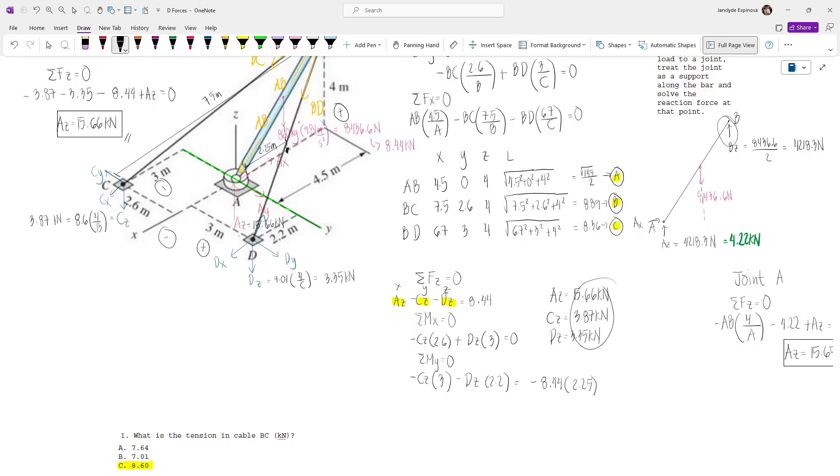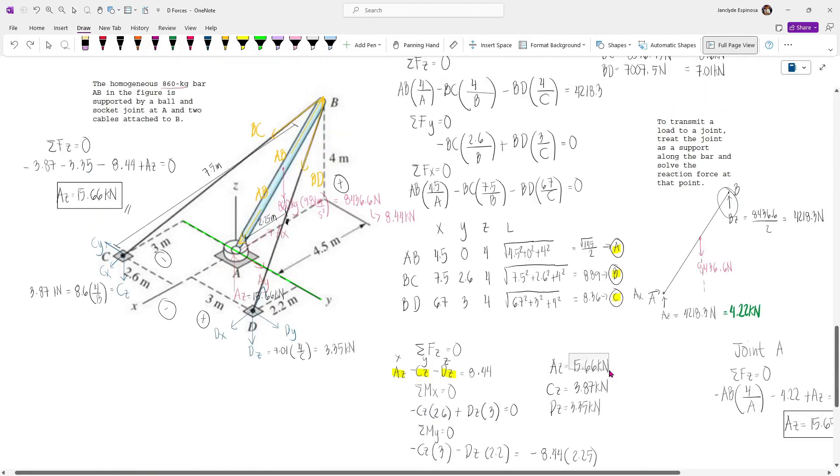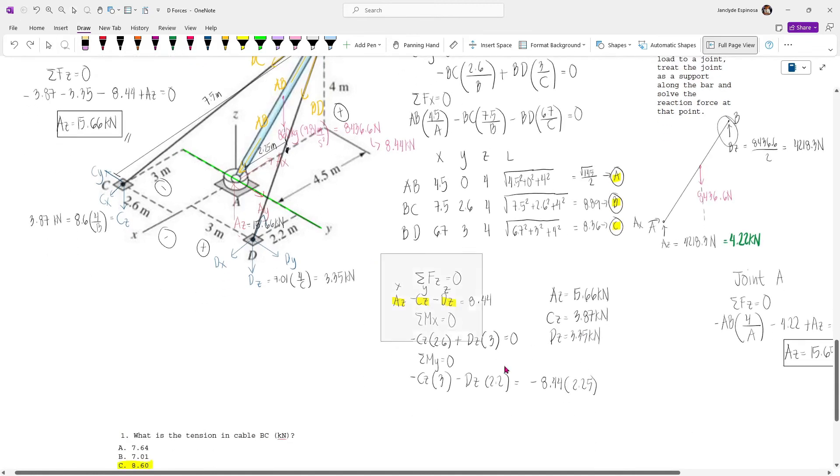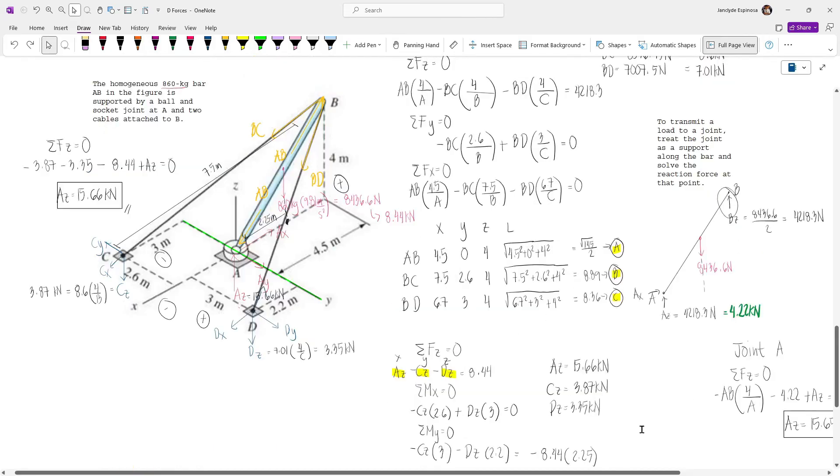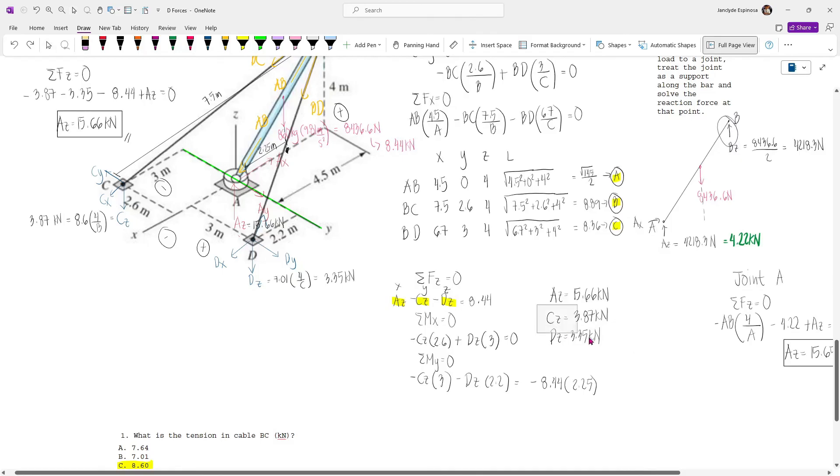Since our results were positive, that means that all of our assumptions are correct. Now if we'll try to check, we obtained 15.66 which was the same earlier and then we have CZ equal to 3.87 and DZ equal to 3.35 KN. However, we were able to save time because we only used the method of moments. Now to get the tension forces in BC and BD, just use these components, CZ and DZ and then try to get the resultant force by using the following. This is gonna be your workaround for the method of moments. It's essentially more efficient.